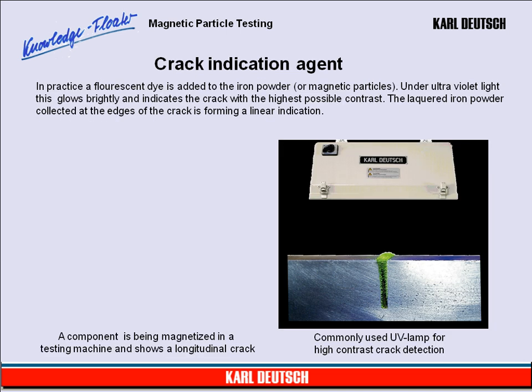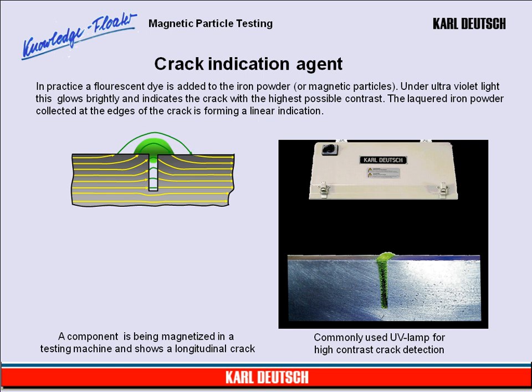Crack Indication Agent. In practice, a fluorescent dye is added to the iron powder, or magnetic particles. Under ultraviolet light, this glows brightly and indicates the crack with the highest possible contrast. The lacquered iron powder collected at the edges of the crack forms a linear indication. Visual testing with ultraviolet light is familiar to us from banks, where it is used to detect counterfeit money bills.